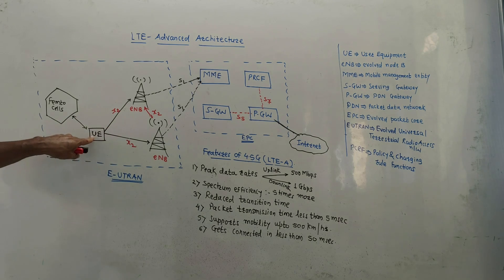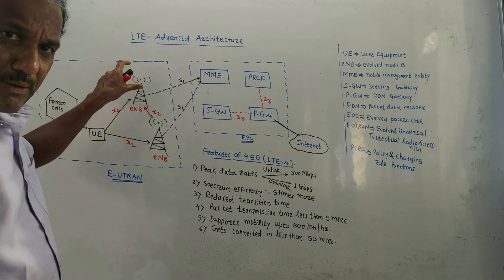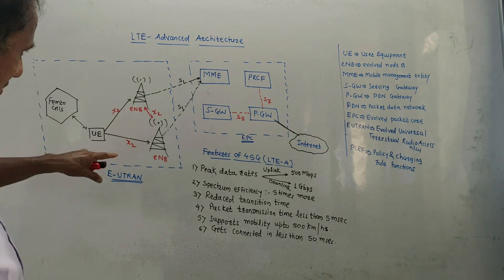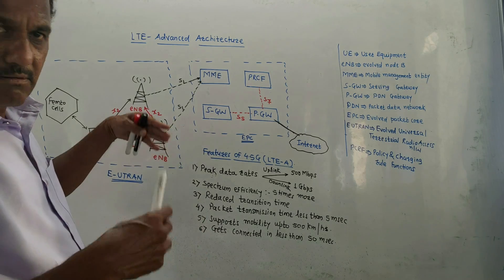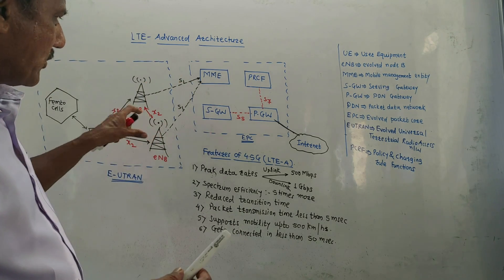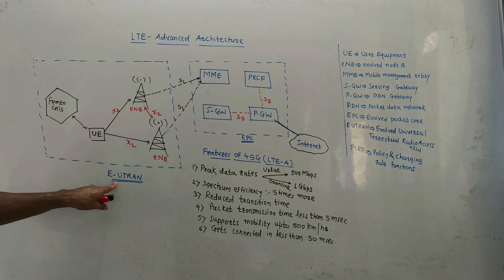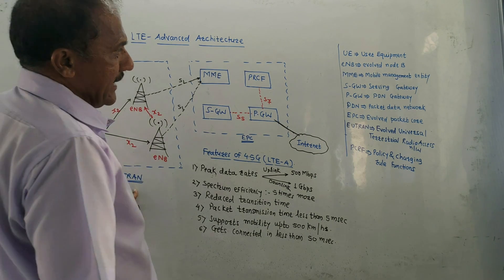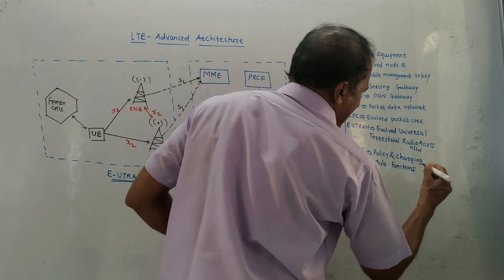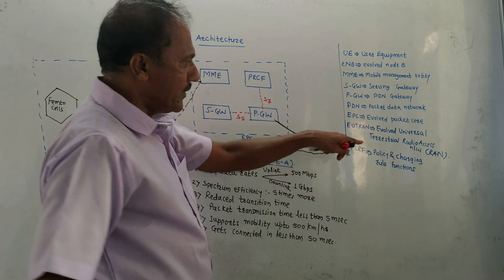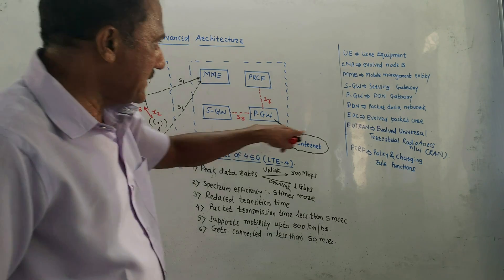To summarize the blocks: eNB is evolved Node B, UE is user equipment, and femto cells are the smallest cells as explained. eNB consists of the base station. An important advantage is the speed, which is much more than that of the existing LTE network. The architecture has two main parts: E-UTRAN, that is evolved universal terrestrial radio access network, and EPC, which is evolved packet core.